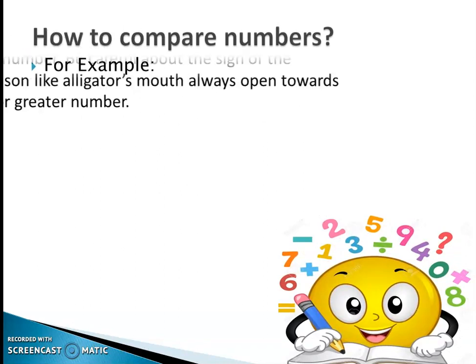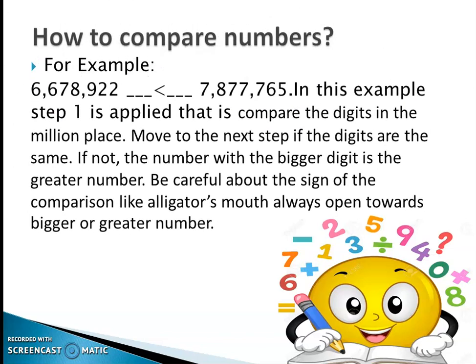This is an example. 6,678,922 is less than 7,877,765. In this example, Step 1 is applied — that is, compare the digits in the millions place. Move to the next step if the digits are the same. But in this example, the millions digits are not the same, so the number with the bigger digit is the greater number. Be careful about the comparison sign — think of it like an alligator's mouth, always open towards the bigger or greater number.